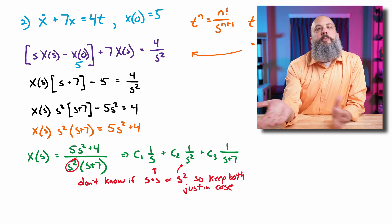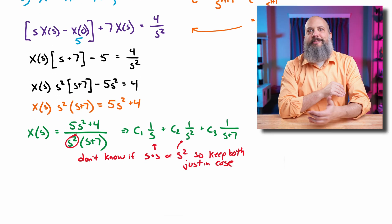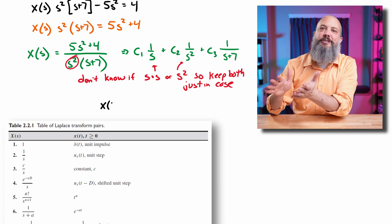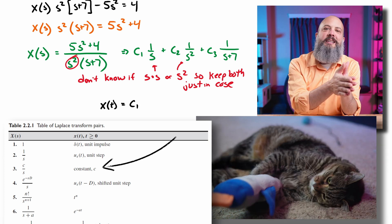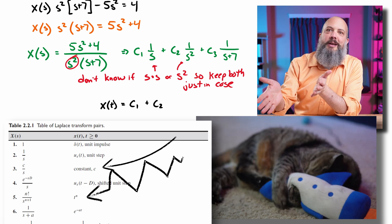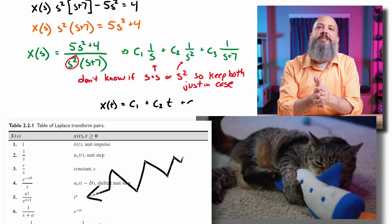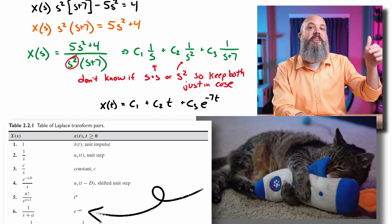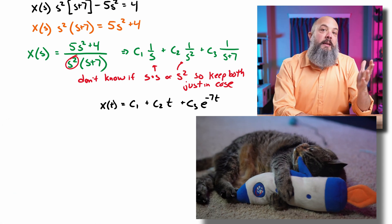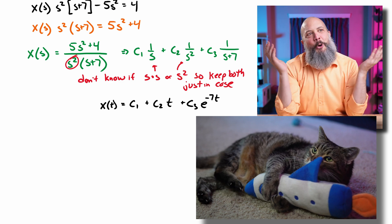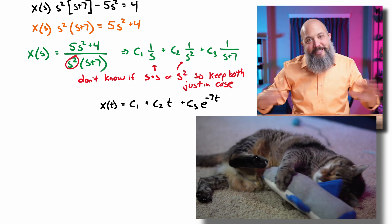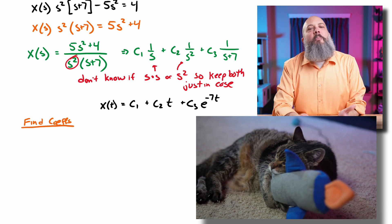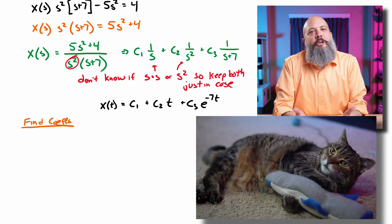I'm going to do the inverse Laplace transform now — get some partial credit in case I make mistakes later on. The 1/s term is just going to become a constant, C1. The 1/s squared is going to become a t term, so C2 times t. And the 1/(s+7) term is going to become a negative exponential, C3 times e to the negative 7t, where a is 7. And now I just need to solve for the coefficients doing partial fraction decomposition — one of my least favorite things, but the more often you do it, maybe it doesn't seem quite so bad.